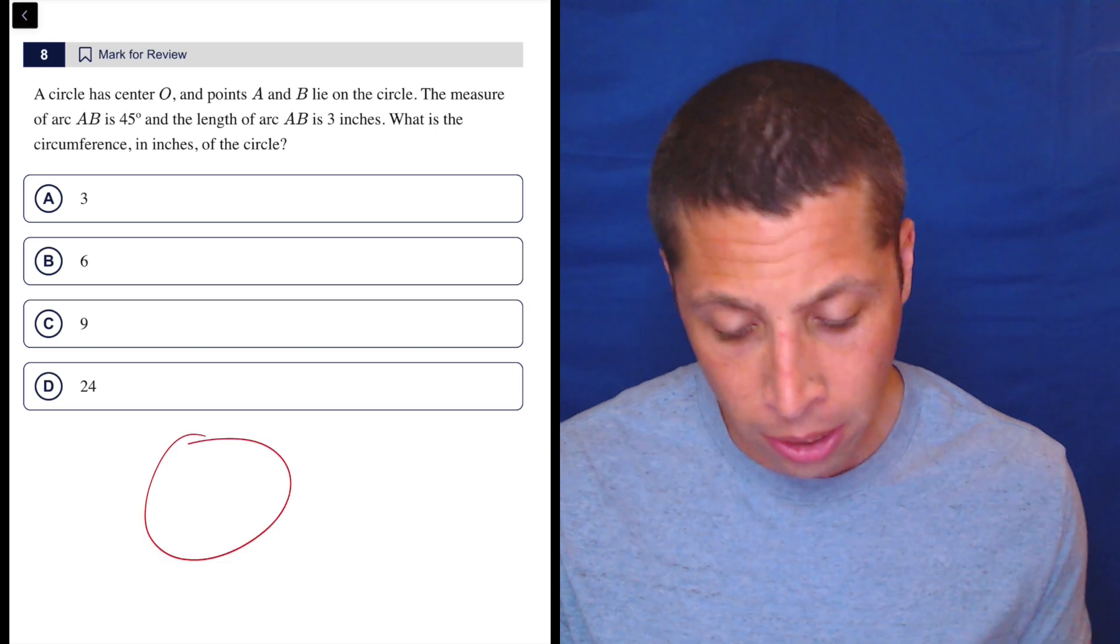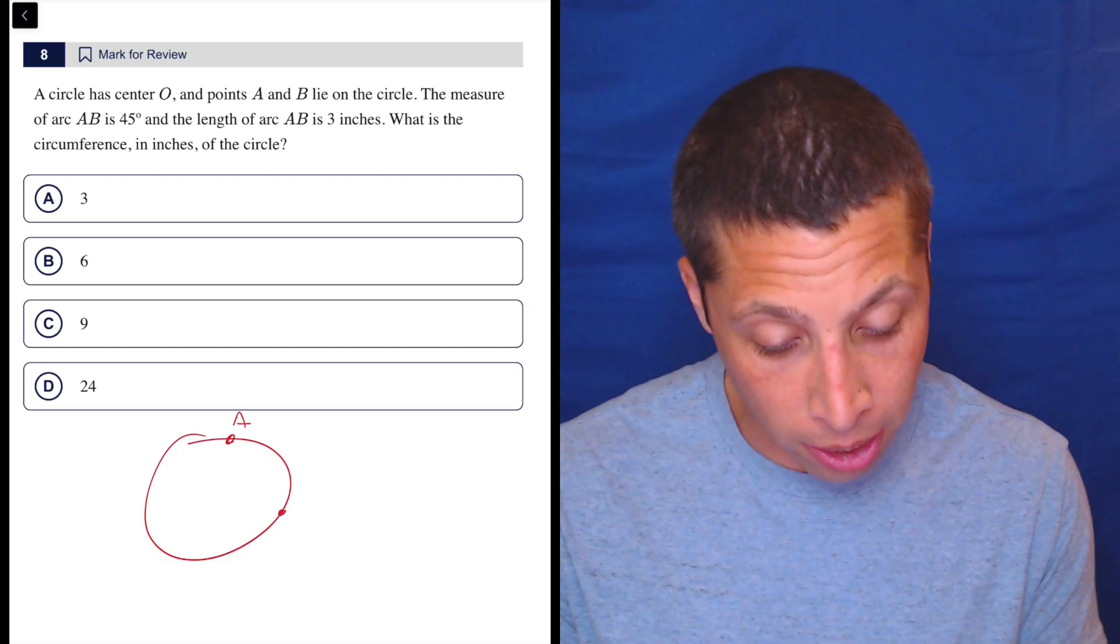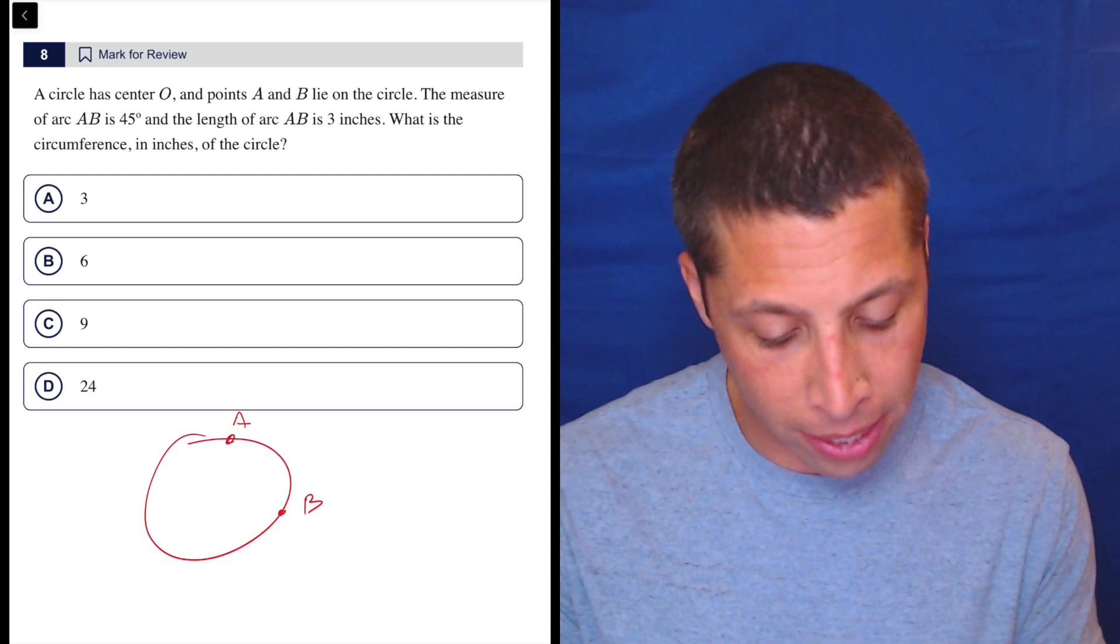So let's just draw the circle. We have a circle and points A and B lie on the circle. The measure of arc AB is 45 degrees.